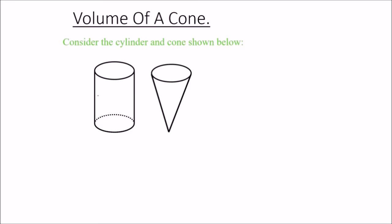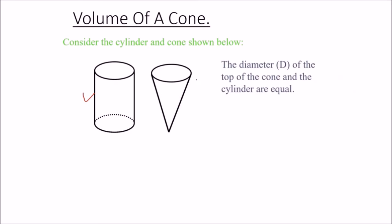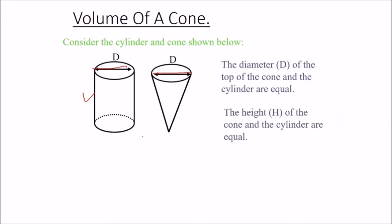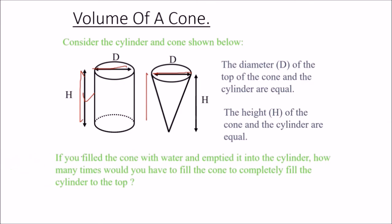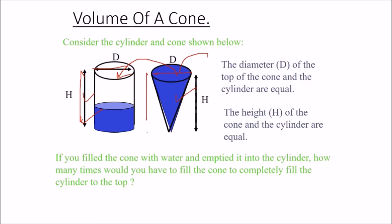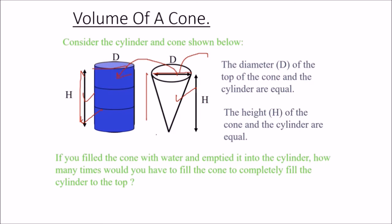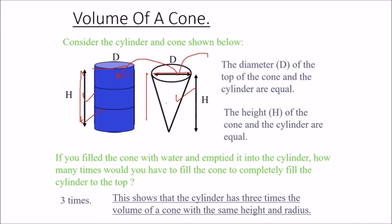A cylinder and a cone have equal base diameter and equal height. If we fill the cone with water and empty it into the cylinder, we need to repeat this three times to completely fill the cylinder. This shows the cylinder has three times the volume of the cone with the same height and radius.